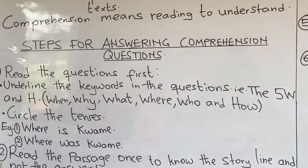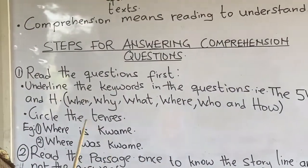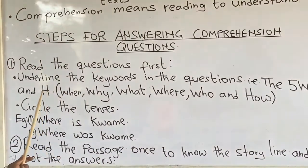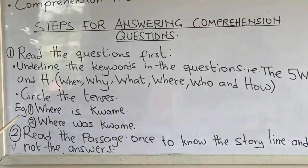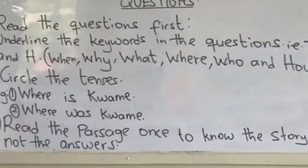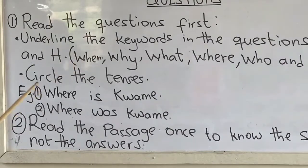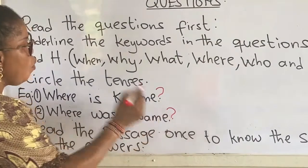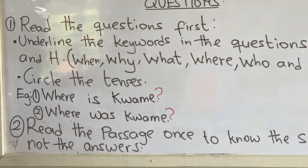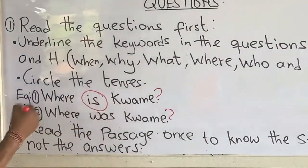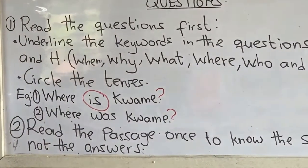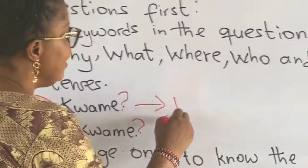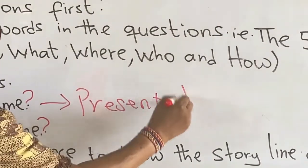Also, circle the sentences. Now, let's look at example one: 'Where is Kwame?' The verb here is 'is,' which is in the present tense. So it means when we are answering this question, the answer should be in the present tense.